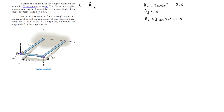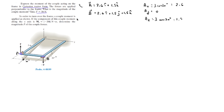The position vector of A is equal to 2.6i plus 1.5k. Then we find B, which is the same as A but with a 1.5 Y component: 2.6i plus 1.5j plus 1.5k. Now that we have the position vectors, we find the vector from A to B, which is B minus A, equal to 1.5j.